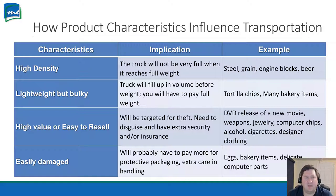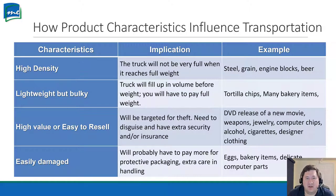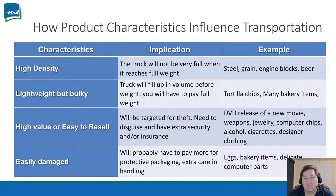The next category is lightweight but bulky — the truck actually fills up before it hits its weight capacity. We call this cubing out: you've taken up all the cubic feet of the truck before hitting the weight limit. Even so, the carrier will still charge you for the whole truck as if you're using the full weight capacity. Examples are potato chips, tortilla chips, or some bakery items — bags of potato chips don't weigh the same as lead, but take up a lot more space.